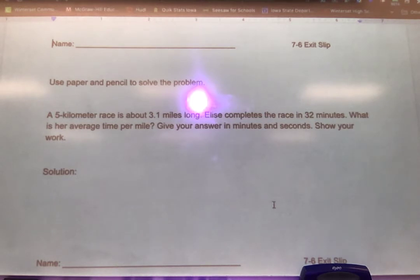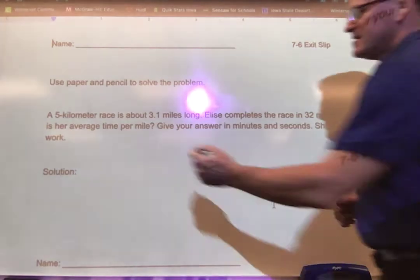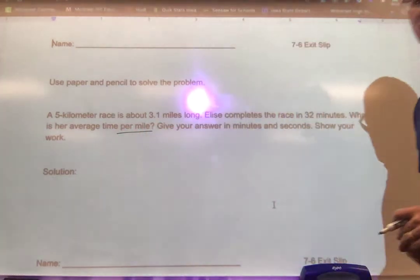So in this case there's a 5 kilometer race that's about 3.1 miles long and Elise completes this race in 32 minutes. What is her average time per mile? So that's that unit rate.